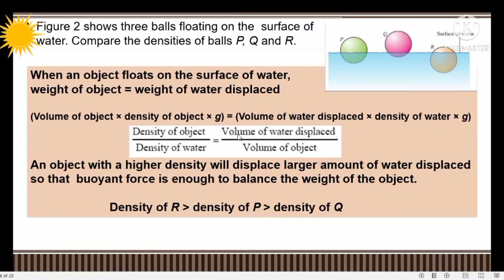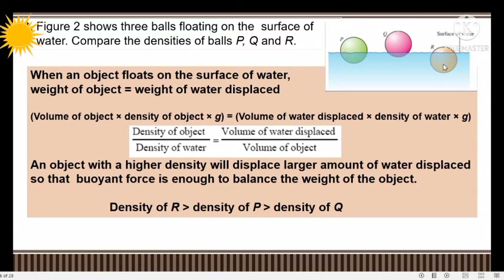Since all three objects are in the same liquid, we can use this relationship: a denser object displaces a larger volume of water so that the buoyant force is enough to balance its greater weight. From the figure, ball R sinks more — it has the largest volume of liquid displaced — meaning it requires the largest buoyant force. Therefore: density of R > density of P > density of Q.